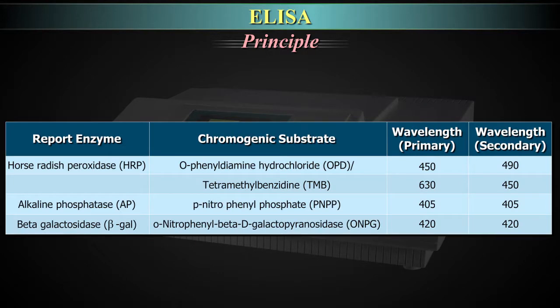A number of enzymes have been used for ELISA. For example, with the reporter enzyme being horseradish peroxidase or HRP, two different chromogenic substrates can be used. When the chromogenic substrate is O-phenylenediamine hydrochloride, what we call OPD, it can have two wavelengths: the primary being 450 nm and the secondary wavelength being 490 nm.